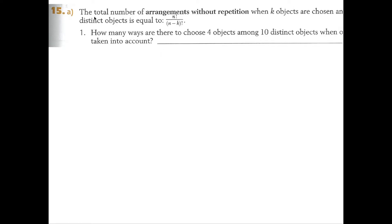Question number 15, part A. The total number of arrangements without repetition when k objects are chosen and there are n distinct objects is equal to n factorial divided by n minus k factorial.